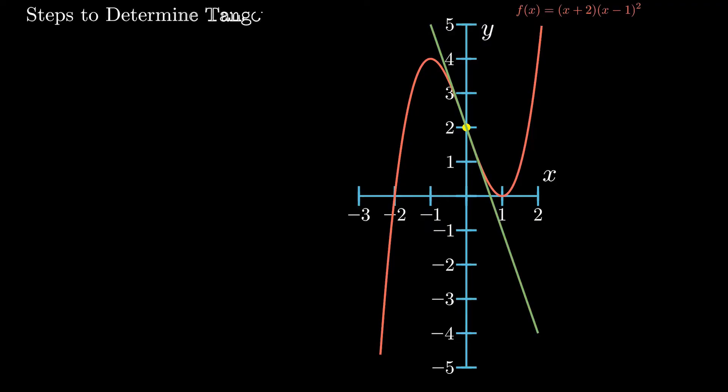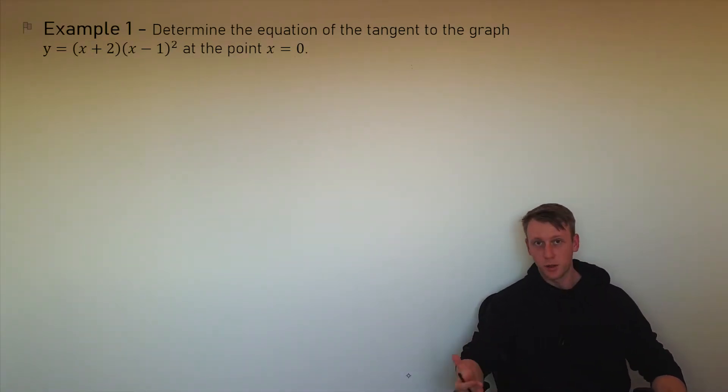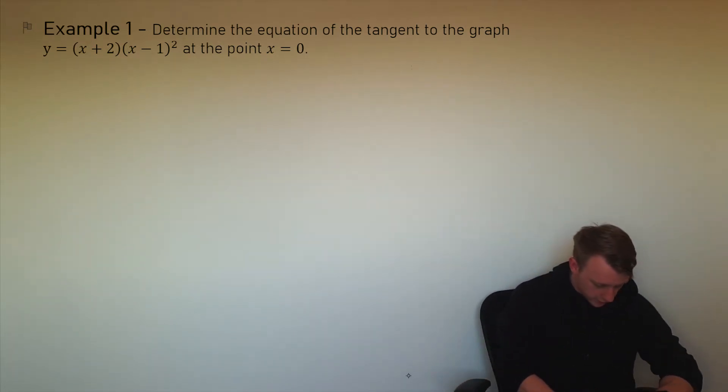The first step that we want to do to find the equation of the tangent is to differentiate the function itself. This is so that we can establish gradient values. So we're going to do that for this function here. I notice it's a product of two functions. I'm going to have to use the product rule to differentiate it.